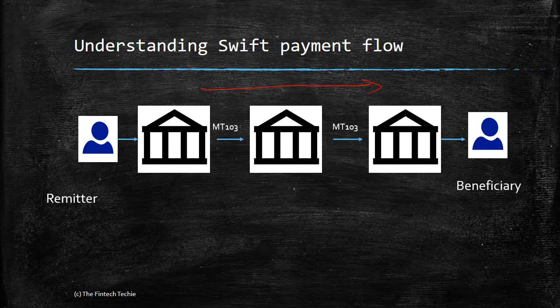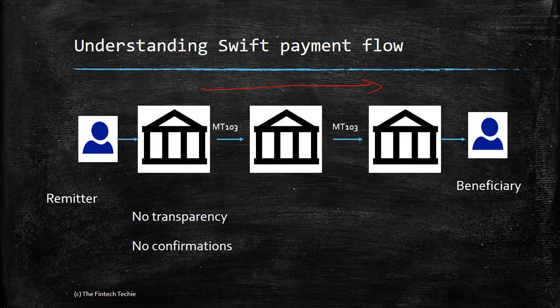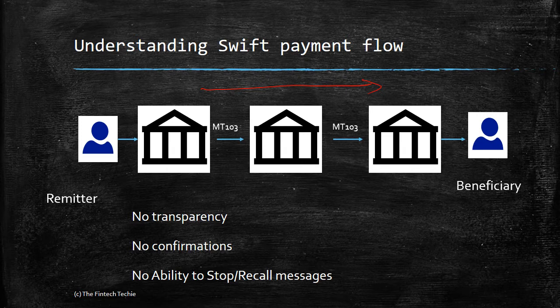Now it is ironic, but unlike you can track your food delivery which you order via an app like Zomato or Swiggy, a multi-million dollar payment is not possible to be tracked. Yes, that's the irony of it — we don't even know what the SLAs are, what are the charges deducted at each stage. There is no transparency, no confirmation that the payment has reached the beneficiary, and there is no ability to stop or recall the messages. Obviously, you cannot stop or recall because you don't have a trace of it once the payment leaves bank A.